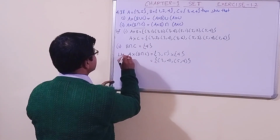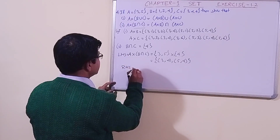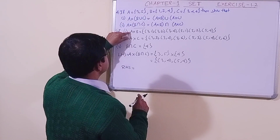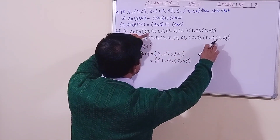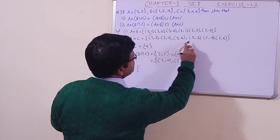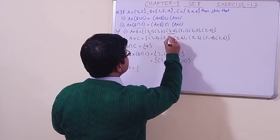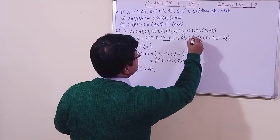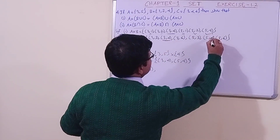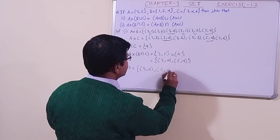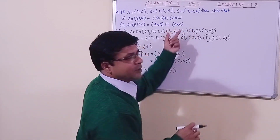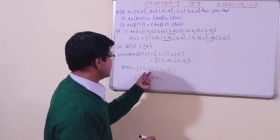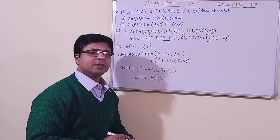For the right-hand side, we take the intersection of A cross B and A cross C. Checking each pair: (3,1) is not in A cross C, (3,2) is not there, (3,4) — yes, (3,4) is in both, so we write (3,4). Then (5,1) is not there, (5,2) is not there, (5,4) — yes, so we write (5,4). The right-hand side is {(3,4), (5,4)}. Left-hand side equals right-hand side: (3,4), (5,4). Thank you, students.